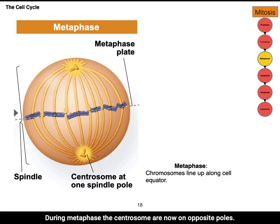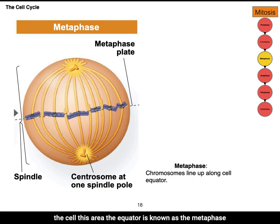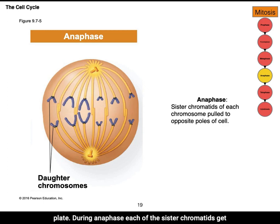During metaphase, the centrosomes are now on opposite poles, causing the chromosomes to line up at the equator of the cell. This area — the equator — is known as the metaphase plate. During anaphase, each of the sister chromatids get pulled towards opposite poles of the cell.